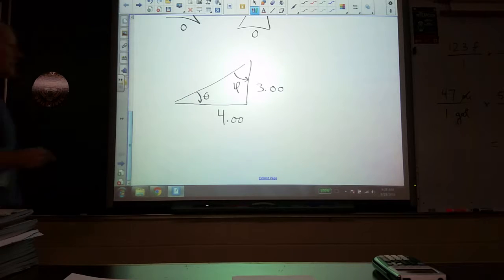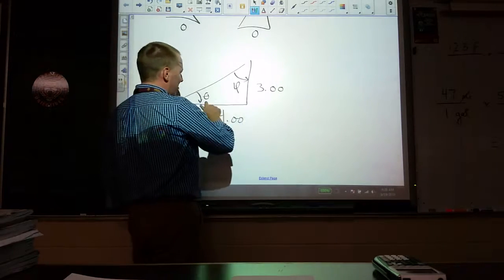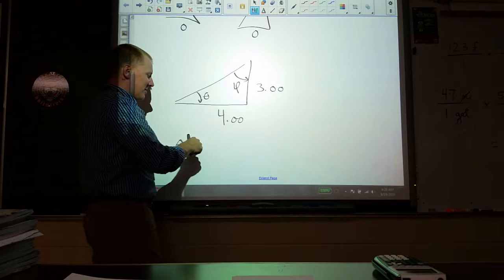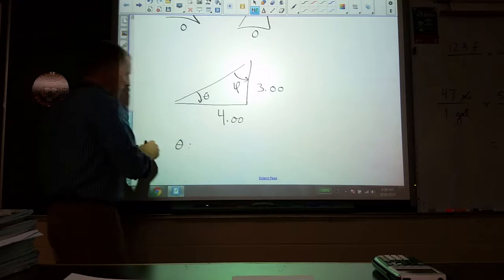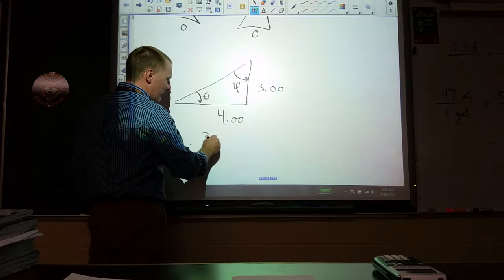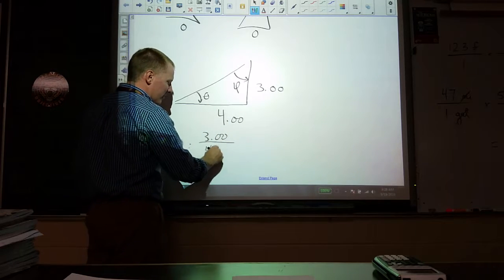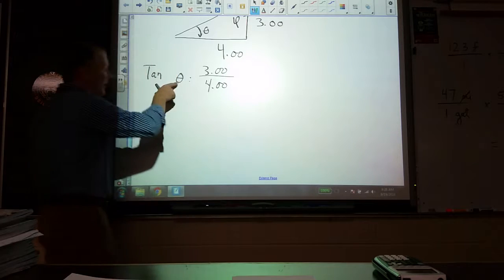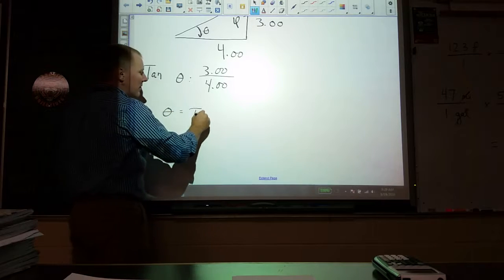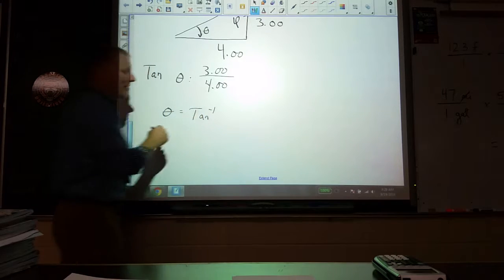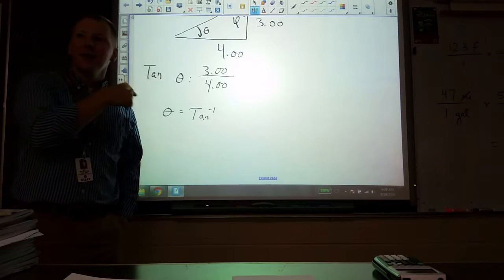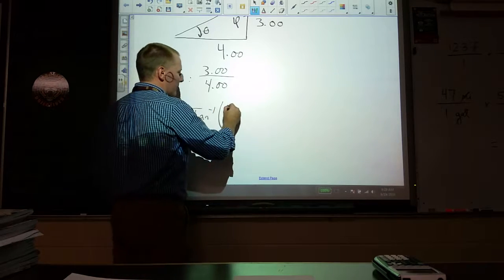If we're looking at theta, we've got the side that's opposite theta and the side that's adjacent to theta, so that means tangent. We know that tangent of theta equals opposite 3.00 over adjacent 4.00. To find theta, we have to take the inverse of this function. If you look on your calculators, the tangent button, if you hit the second function, you'll get the inverse function of 3 over 4.